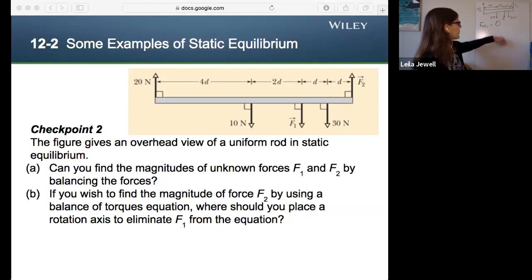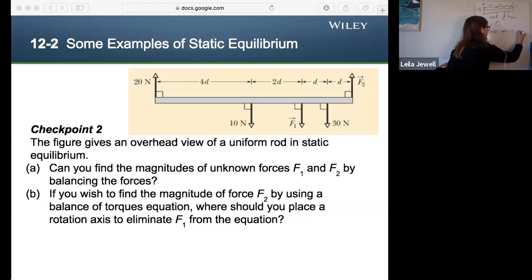And balancing the forces is really quick when they're all in the y direction like this. I notice I just have 20 newtons and F2 are up. So plus F2 plus 20 newtons. And then the other three are down. So minus 10 newtons minus F1 minus 30 newtons is all equal to zero.